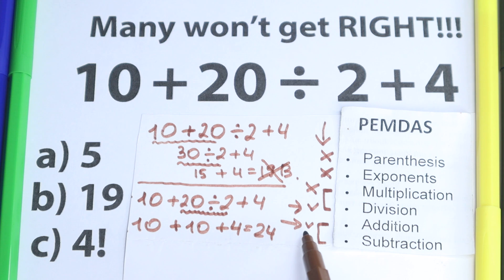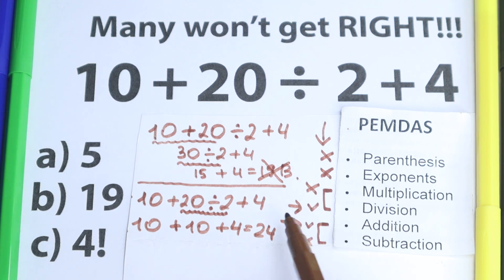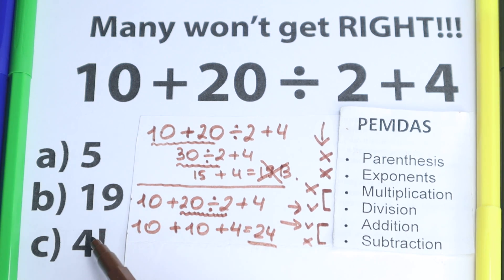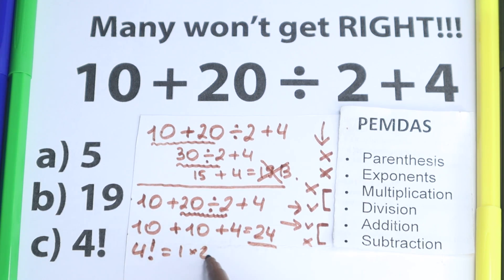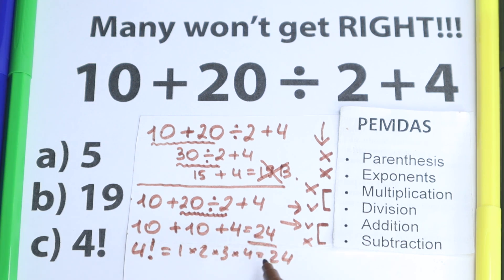Multiplication and division always come before addition and subtraction, so we start with multiplication and division, then finish with addition and subtraction. So 19 is absolutely the wrong answer. But look closely at the answer options — the correct answer is 24, and one option shows 4 factorial. 4 factorial equals 1 times 2 times 3 times 4, which is 6 times 4, which equals 24. So it's a tricky question, because 4 factorial is the same as 24.